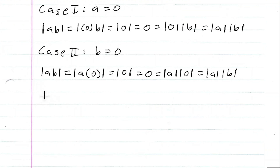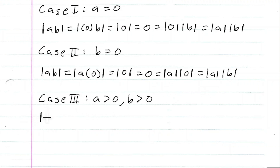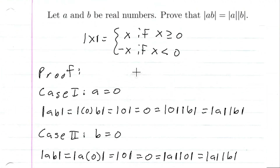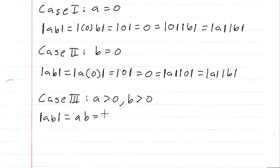Now for more interesting cases. Case three: a is greater than zero and b is greater than zero. We have the absolute value of ab. Since a and b are both positive, a times b is greater than zero, so the absolute value of ab is just ab. Since a is greater than zero, a equals the absolute value of a. Since b is greater than zero, b equals the absolute value of b. So this equals the absolute value of a times the absolute value of b.